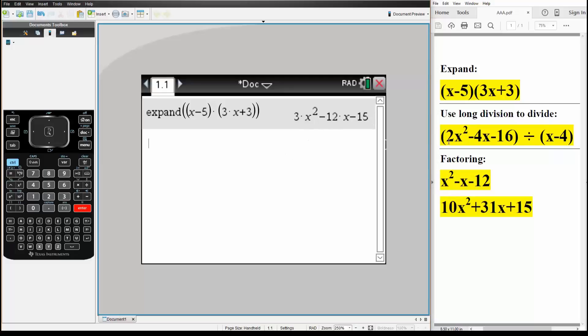Next, we want to divide this polynomial by x minus 4. So on the TI, you simply write what we have: 2x squared minus 4x minus 16 divided by x minus 4. Simply hit enter, and this is the answer for this problem.